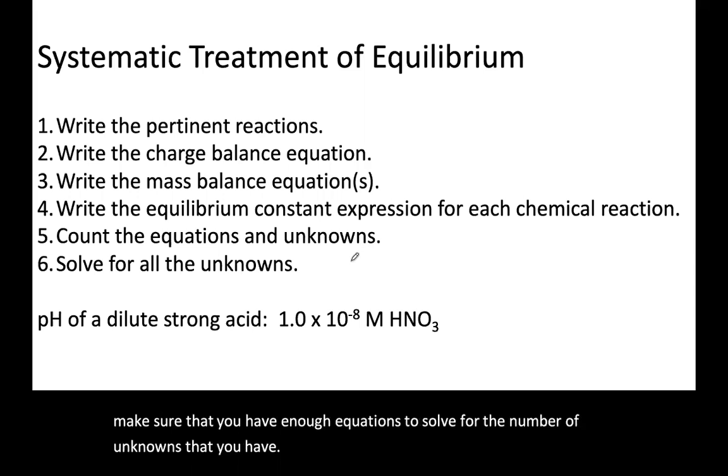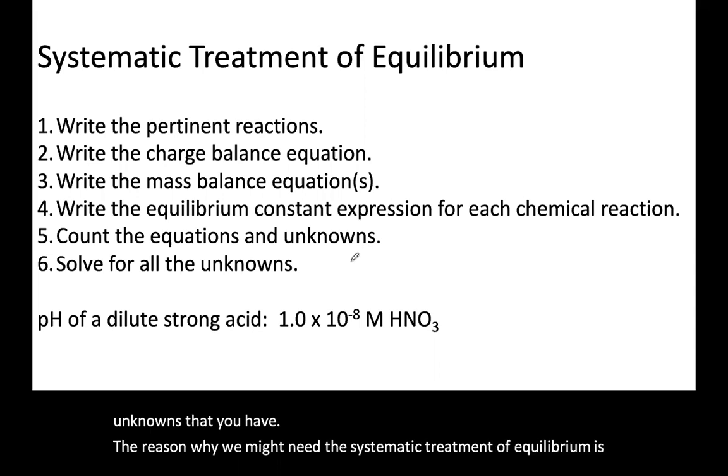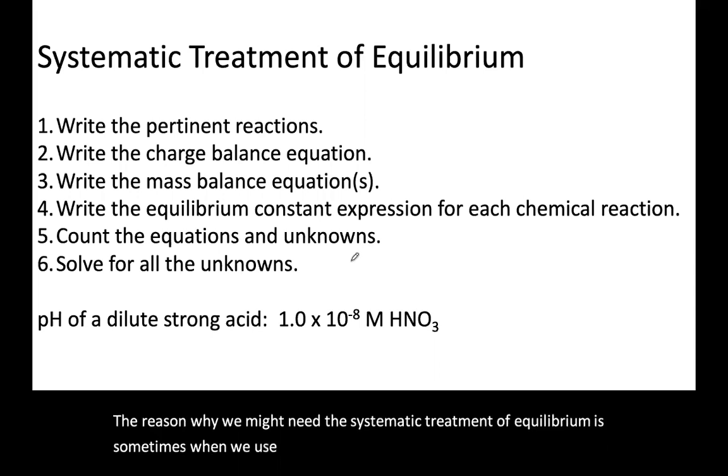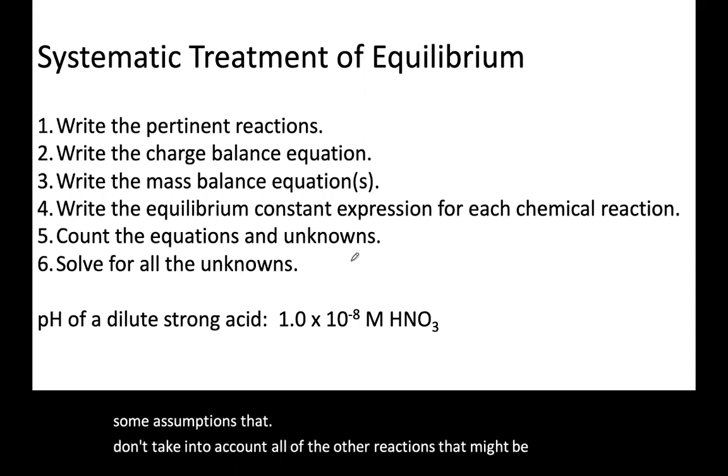The reason why we might need the systematic treatment of equilibrium is sometimes when we use ice tables or other strategies, we make assumptions that don't take into account all of the other reactions that might be occurring. We assume there's a principal reaction and we neglect everything else.